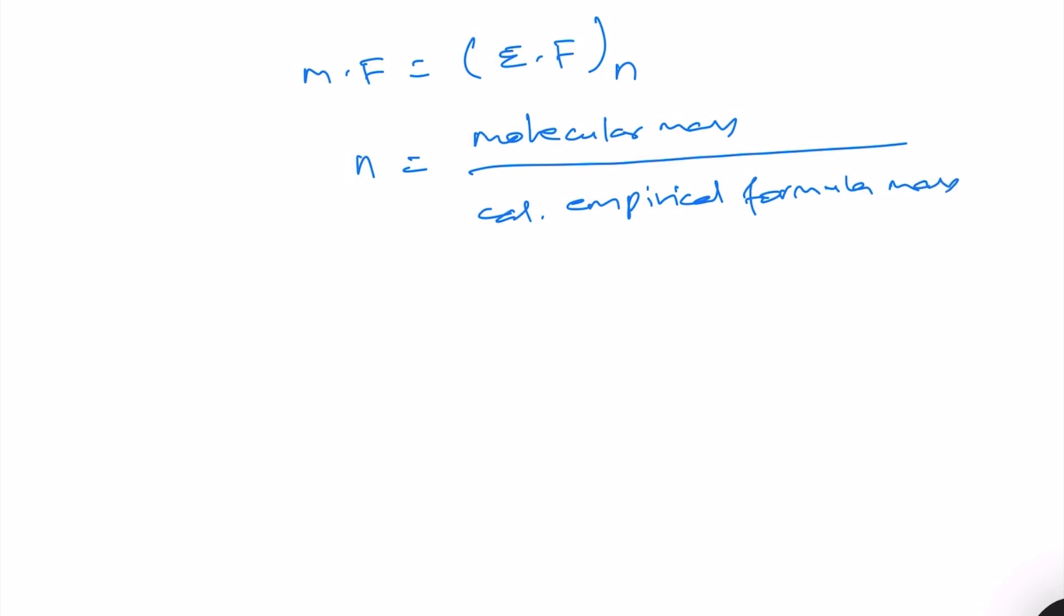So we know the empirical formula and therefore it would not be difficult to find out the calculated empirical formula mass. Its vapor density is given. So molecular mass is 2 times vapor density, and this means 2 times 47, and that is equal to 94.